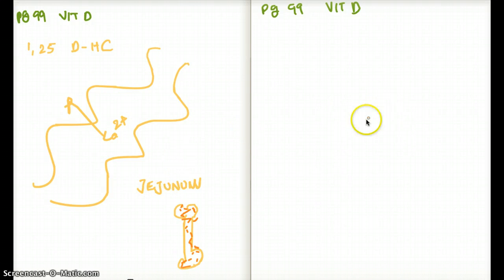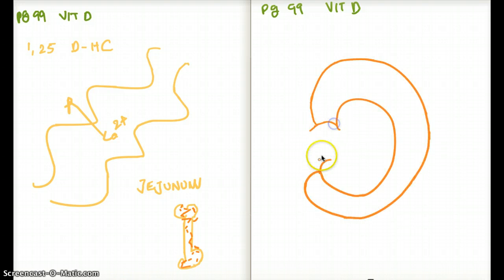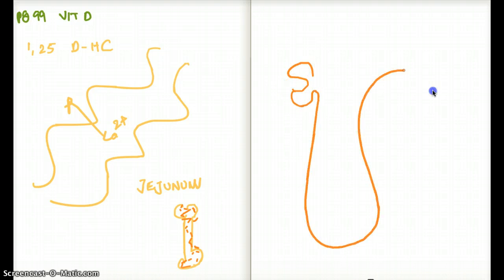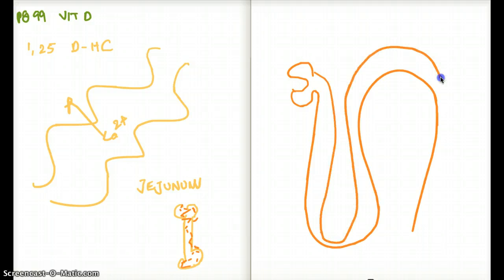What about the kidney? In our kidney, this 1,25-hydroxycholecalciferol also comes, and it absorbs calcium from our kidney as well. But it does it in a little bit different form. It works with a receptor called PTH receptor. Where exactly in the kidney do we have our PTH receptor? We have our PTH receptor in our DCT.